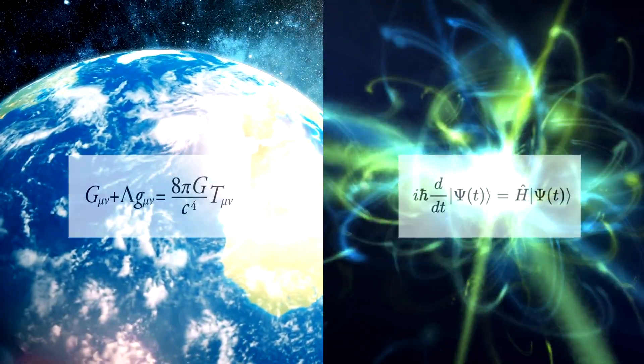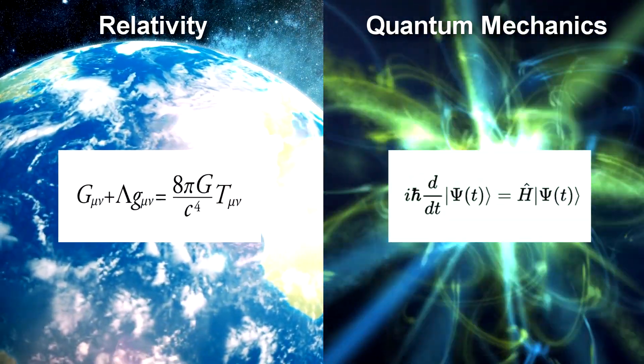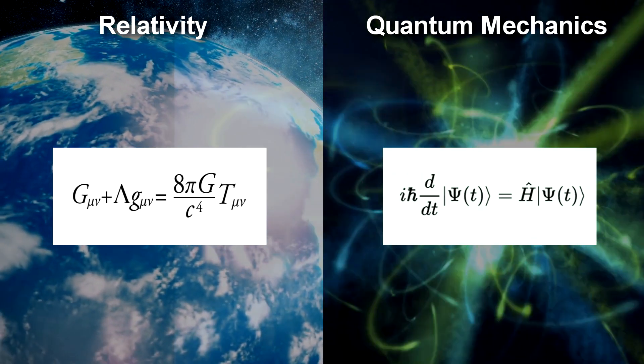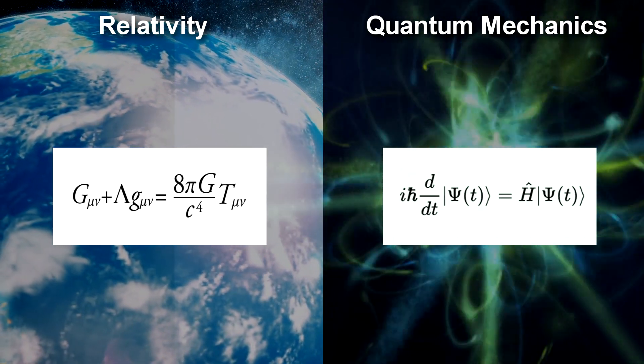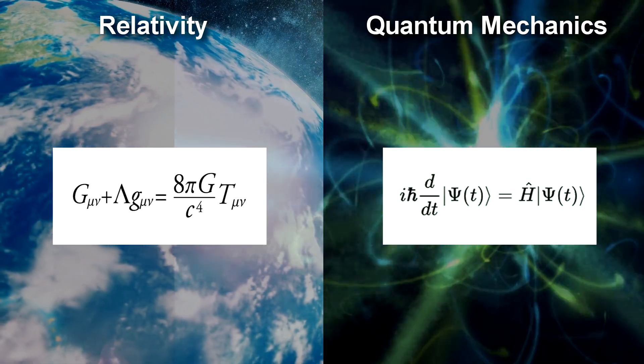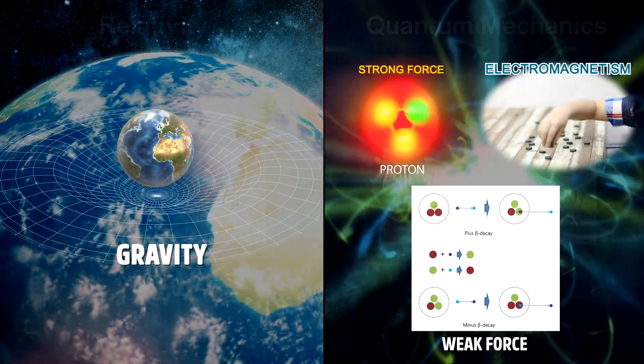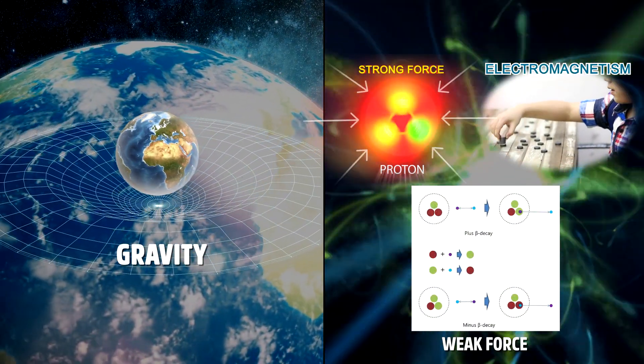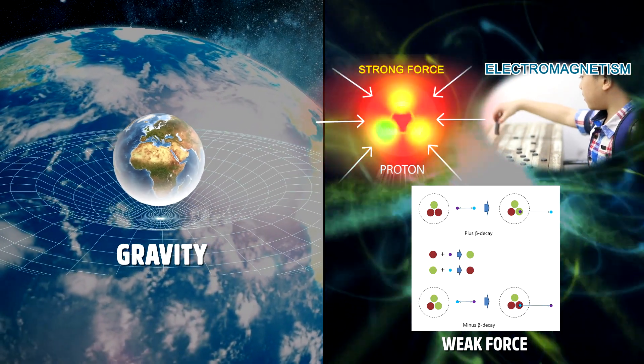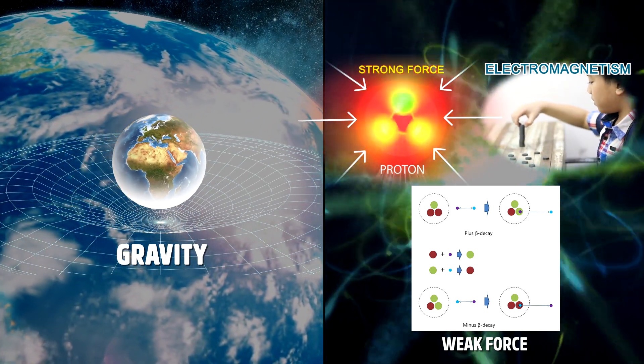The large is described by Einstein's equations of relativity, and the small is described by the equations of quantum mechanics. These two parts of nature are seemingly utterly incompatible when it comes to the equations of physics. The small is ruled by three forces: the strong nuclear force, the weak force, and electromagnetism. The large is ruled by gravity. Gravity is not like the other forces, and nobody has been able to figure out how it is related to the other forces.